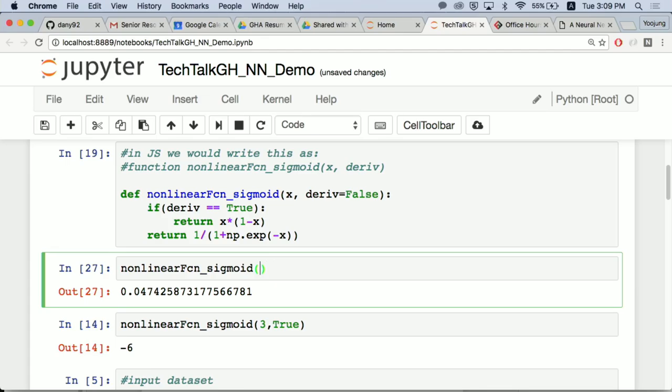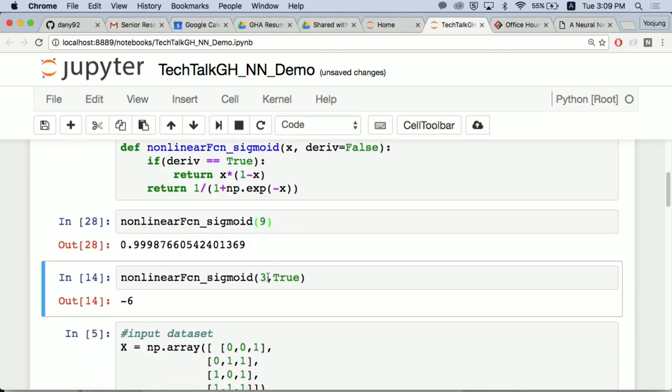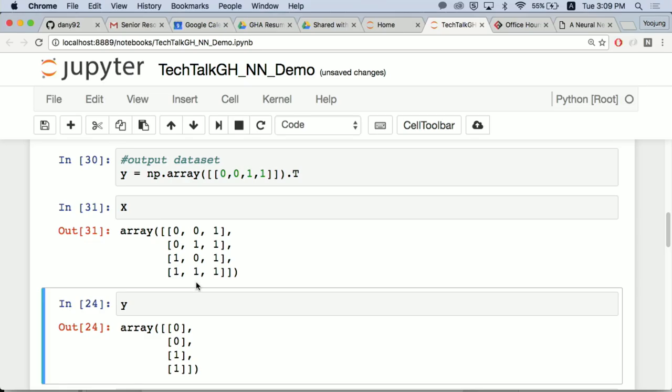For example, I pass a negative three, it outputs something between zero and one. So let's input this dataset X and Y.